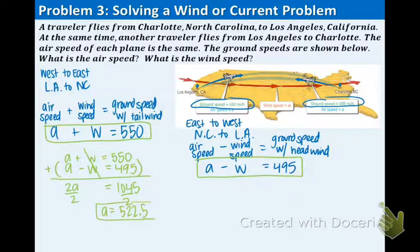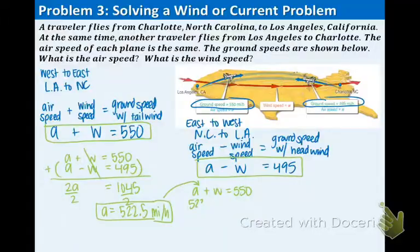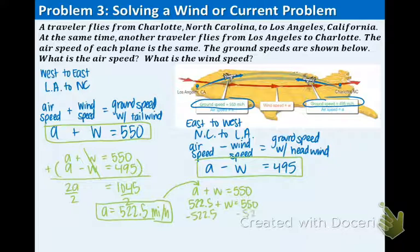Now we need to find our wind speed and we can use either of the equations to do so. Why don't we just take a look at the first one? Remember, once we find one of the variables, you just have to plug it in for one of the equations. A plus W equals 550. The A is now being replaced by 522.5. And one step equation means we're subtracting 522.5 to both sides. We find out that our W is equal to 27.5 miles per hour.